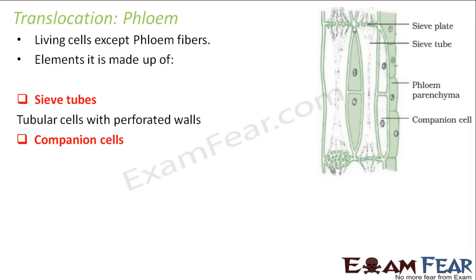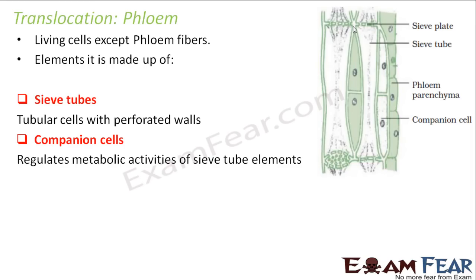The sieve tubes are accompanied by the companion cells. The word companion means a friend, somebody who accompanies. So these companion cells actually accompany the sieve tubes. What do they do? They regulate the metabolic activities of the sieve tube elements.